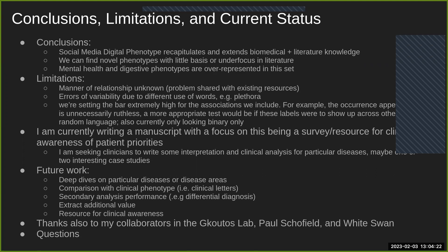The ultimate goal is to create a clinical resource: patients care about this, so these are what clinicians should be asking about. Finding a pipeline to make that happen is the key outcome of this work, with further analysis needed to characterize the nature of the relationships. Thanks to everyone who helped — particularly the Kootos lab, Paul Schofield in Cambridge, and White Swan, who did much of the initial text analysis of Twitter and similar platforms.